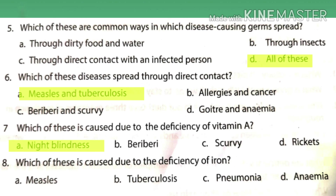Seventh MCQ: which of these is caused due to deficiency of vitamin A? That is night blindness. Beriberi is caused due to lack of vitamin B1, scurvy is caused due to lack of vitamin C, and rickets is caused due to lack of vitamin D. The last MCQ: which of these is caused due to deficiency of iron? That is anemia. Measles, tuberculosis, and pneumonia are communicable diseases.